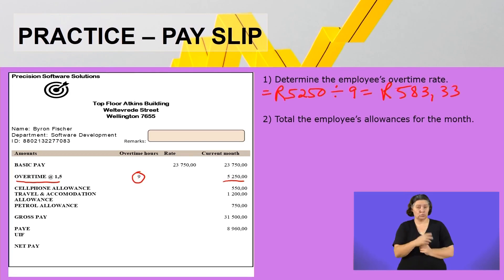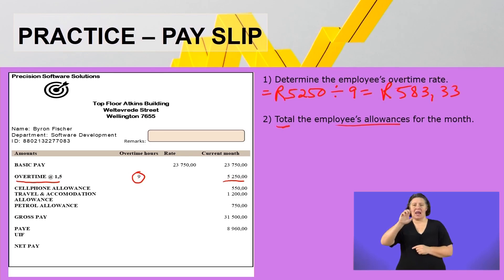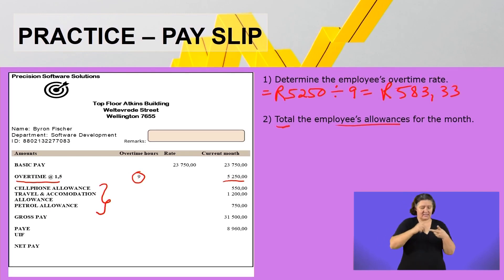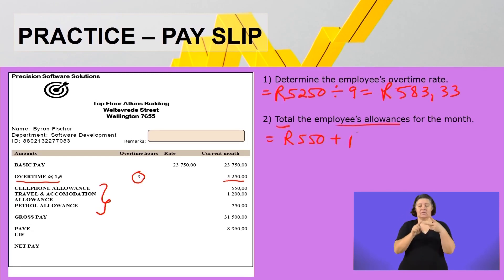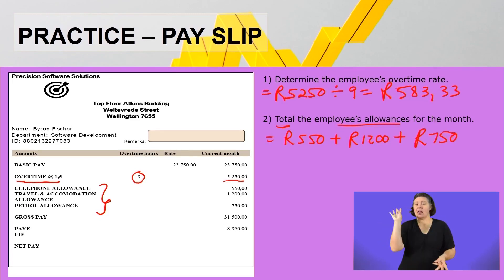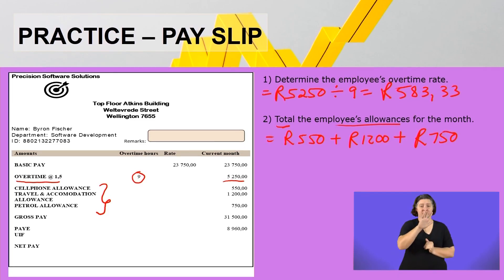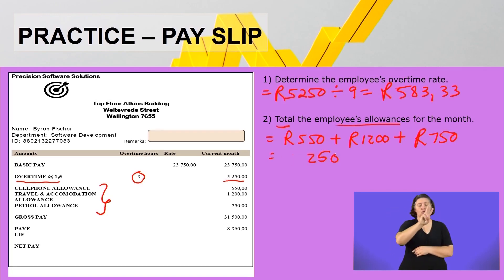Question number two: total the employee's allowances for the month. The allowances are: self-in allowance, travel and accommodation allowance, and petrol allowance. So we say 550 plus 1,200 plus 750 — all in rand. That amounts to 2,500 rand in allowances.